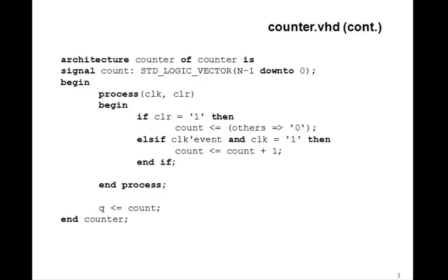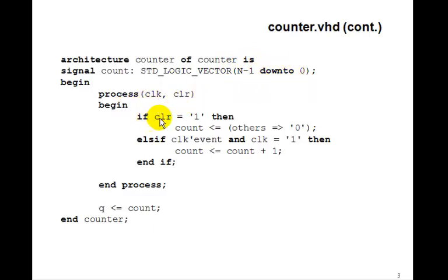The counter is very much like we had before. We'll have a signal count, now n-1 down to 0. Process clock and clear: if clear equals 1, we want to set all the bits of count to 0. We don't know how many there are, so we put others go to 0. Remember, this sets all the bits in count to 0.